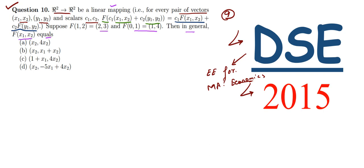Here we have been given linear mapping and the general formula. We have F(1, 2) and F(0, 1).